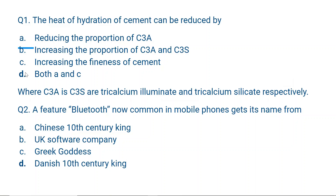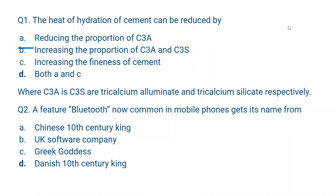Heat of hydration is when water is mixed with cement — it's an exothermic process. The cement settles down, hardens, but slowly releases heat. When we reduce the proportion of C3A — tricalcium aluminate — which is highly exothermic when mixed with water, the heat of hydration reduces. Also, when we increase the fineness of cement, heat of hydration also reduces. This is important because if heat of hydration is high, thermal expansion of the cement can cause cracking on the surface. So reducing heat of hydration means less thermal expansion and the cement doesn't crack.